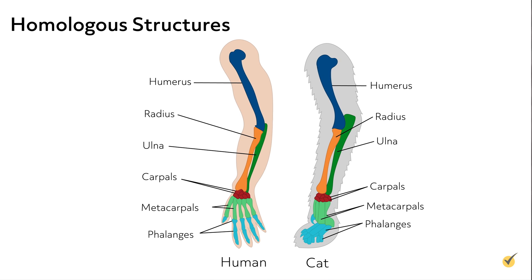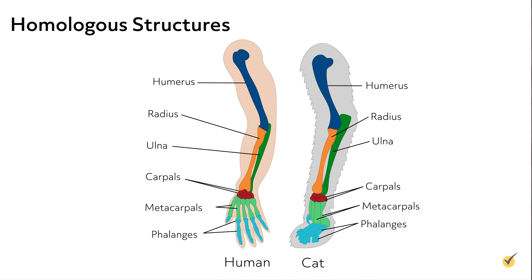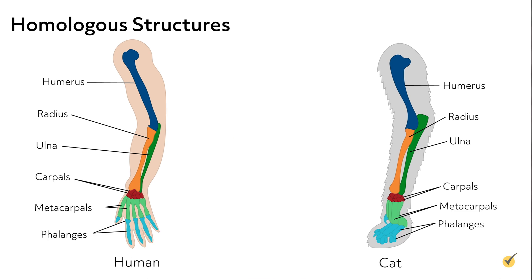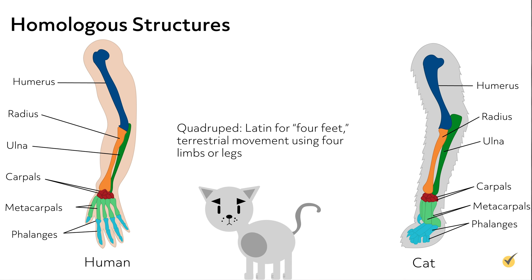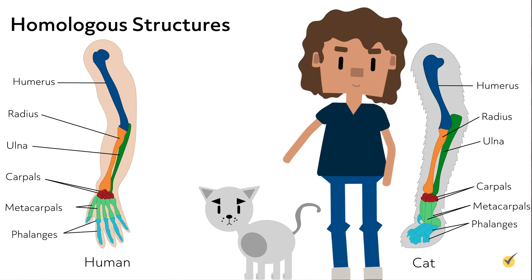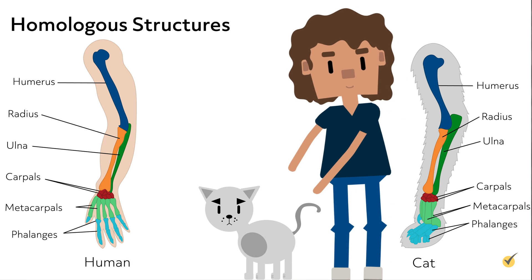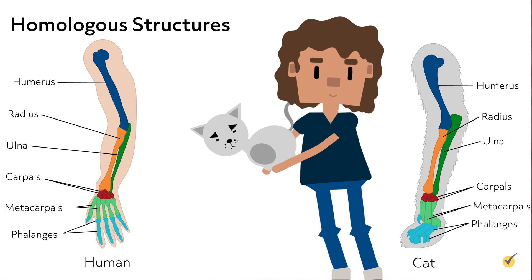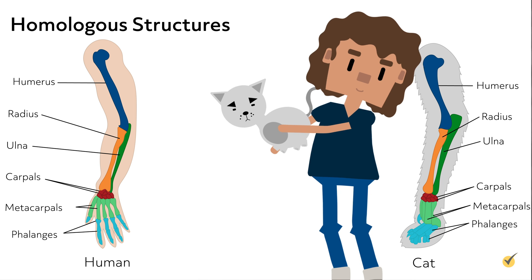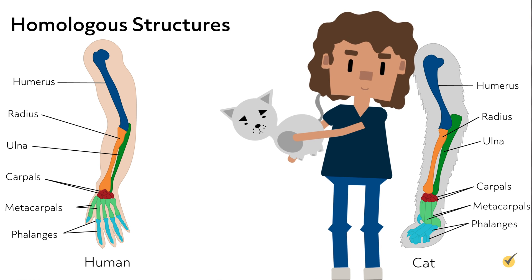All of these structures are similar. However, these structures do not have the same function. Cats are quadrupeds that use their arms for walking and maybe a little climbing and hunting for outdoor cats. Humans, on the other hand, use their arms and hands for gross motor movement like grabbing, hugging and lifting, as well as fine motor movement like using tools or even communicating.